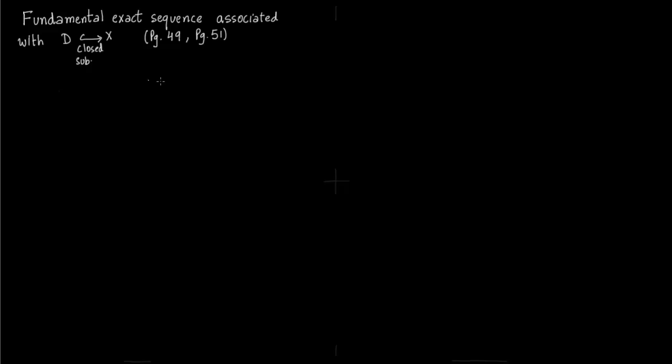This is the sheaf we get. First you have contravariance from O to O_D. Now you want to find the kernel of this map to make this exact. So the kernel sheaf we write as I_D times X and 0.